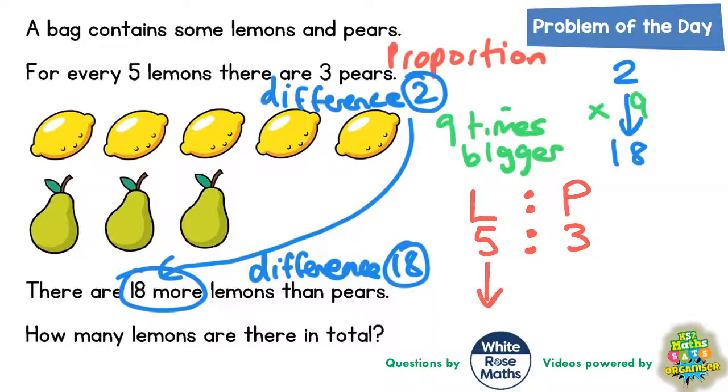If we drop an arrow off the five and an arrow off the three, we've just said that we're making the difference nine times bigger. So we need to make the number of lemons and pears nine times bigger as well. The five is multiplied by nine and the three is multiplied by nine.